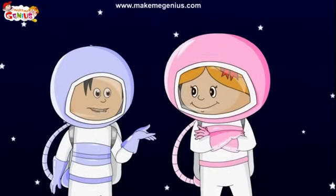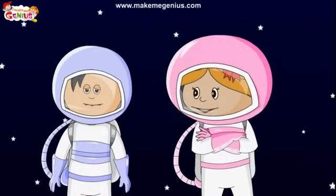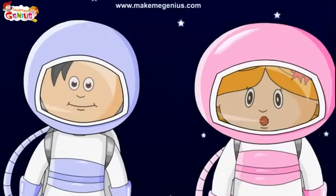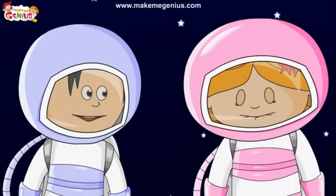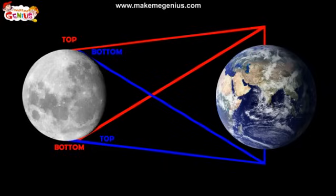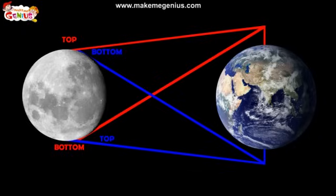Does everyone on the earth see all these phases at the same time? No, the phases are different in each hemisphere. I know that the moon orbits near the equator of the earth, and in the northern hemisphere we are standing on the opposite side of the globe from countries in the southern hemisphere — we are upside down from each other. That is why we see the moon from a completely different vantage point from each other.